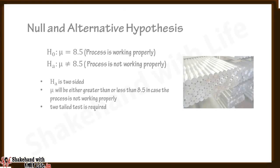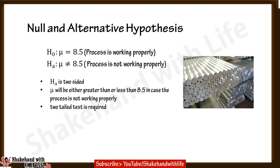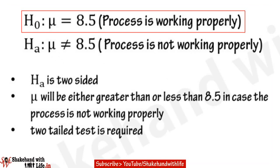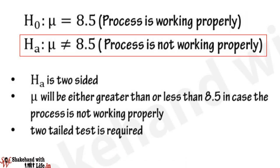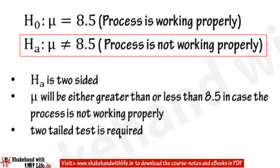With these parameters, test at an alpha of 5% whether the process should be considered as working properly or not. First, state the null and alternative hypothesis. The null hypothesis H₀: population mean μ = 8.5 inches, implying the process is working properly. The alternative hypothesis Hₐ: population mean μ ≠ 8.5 inches, meaning the population mean could be less than or greater than 8.5 inches.